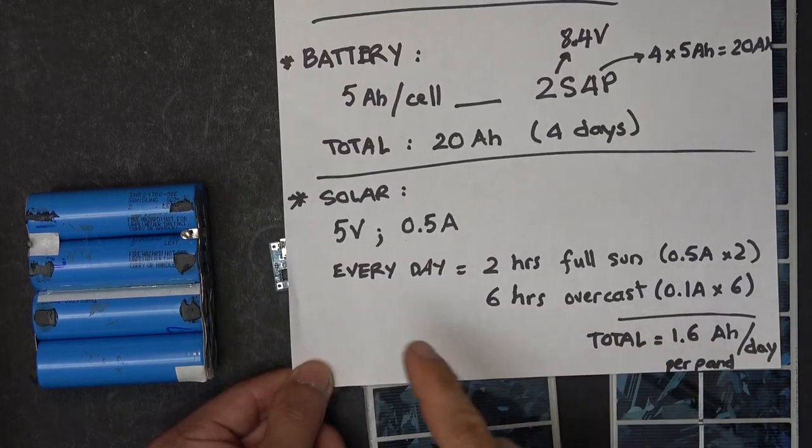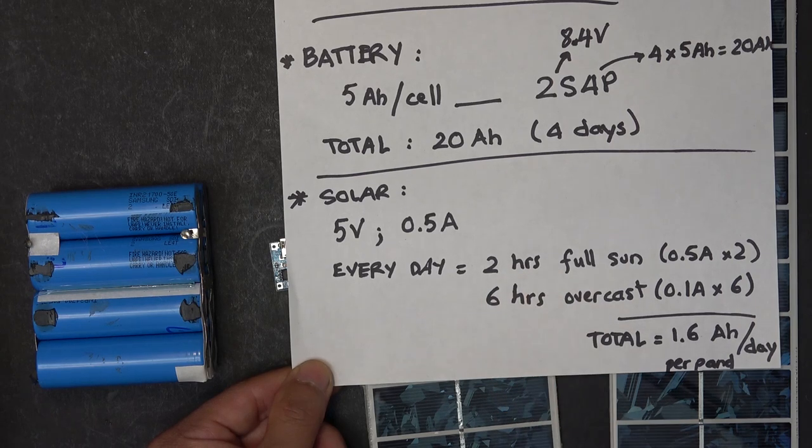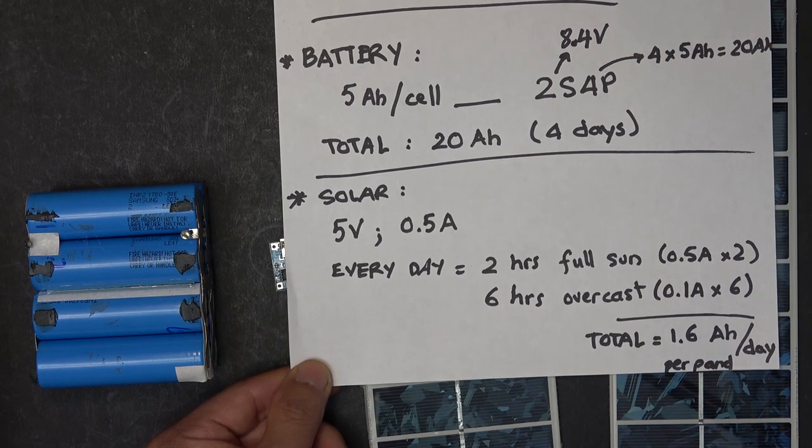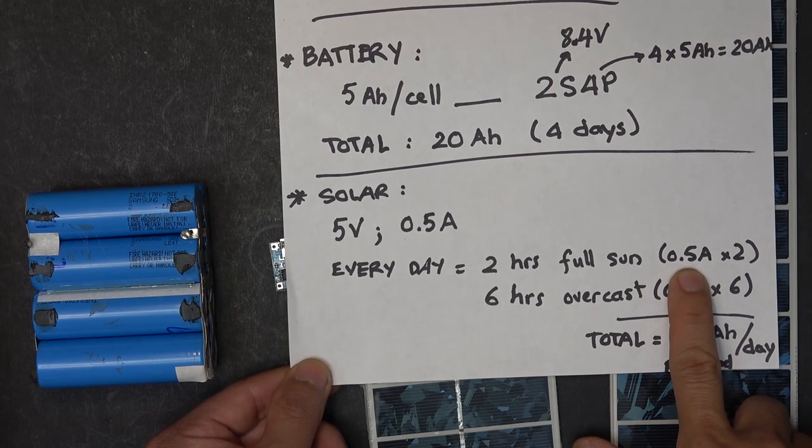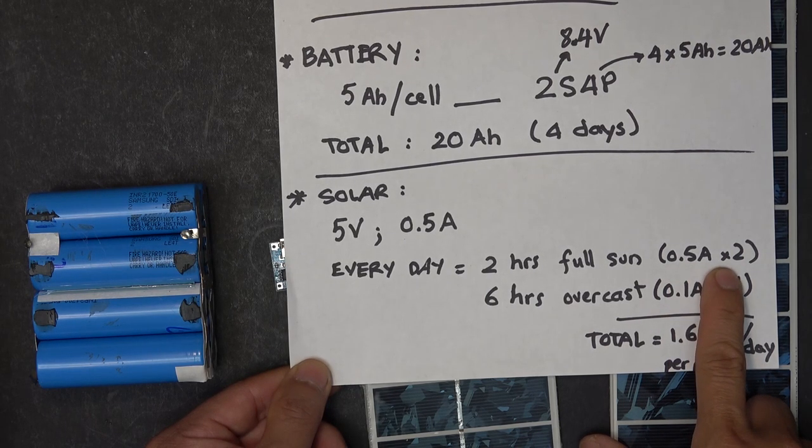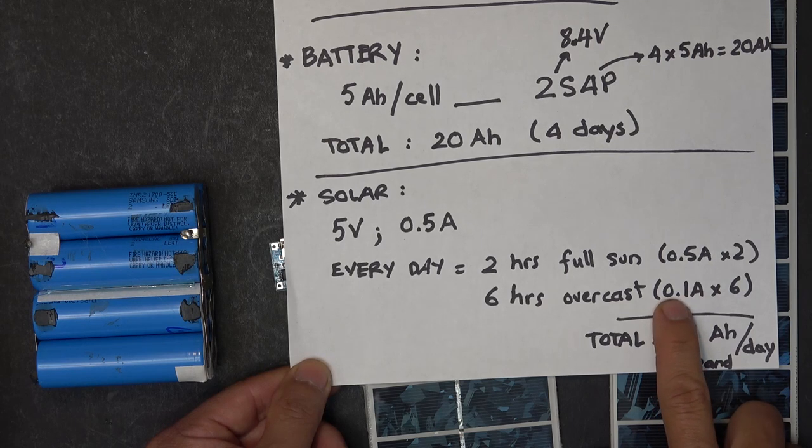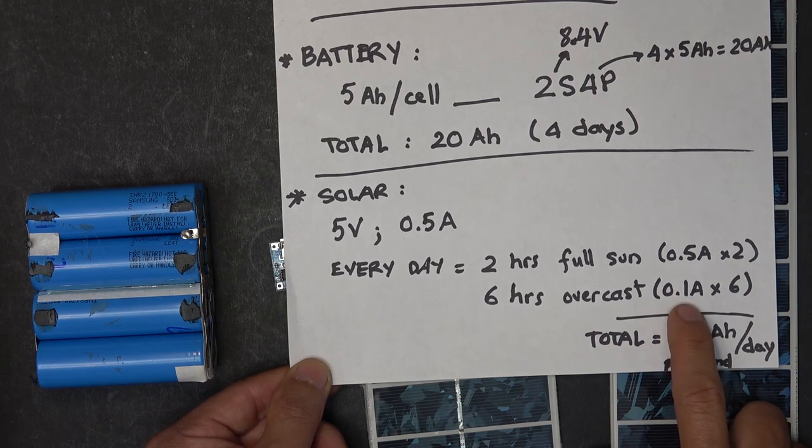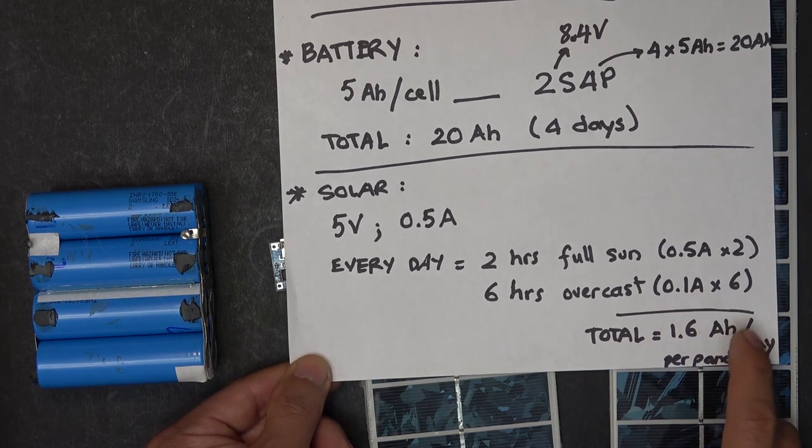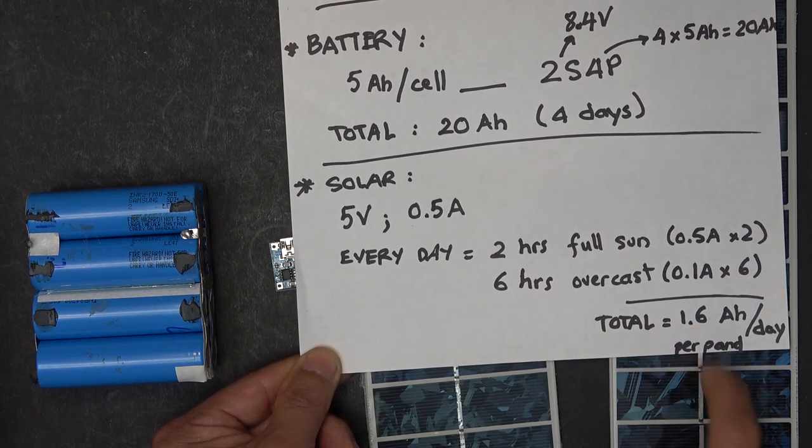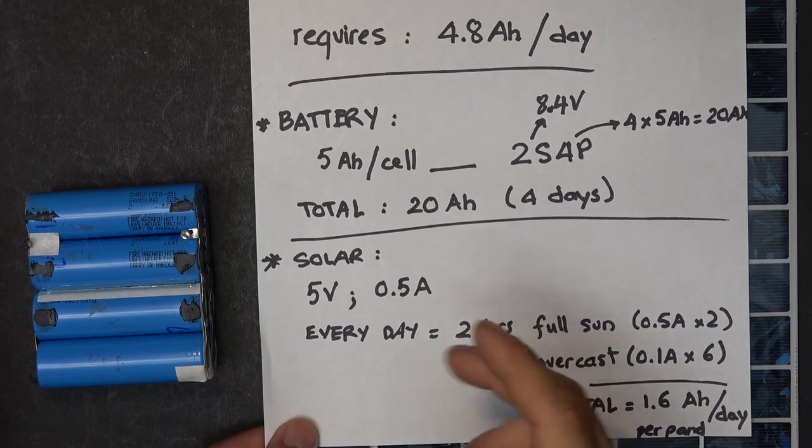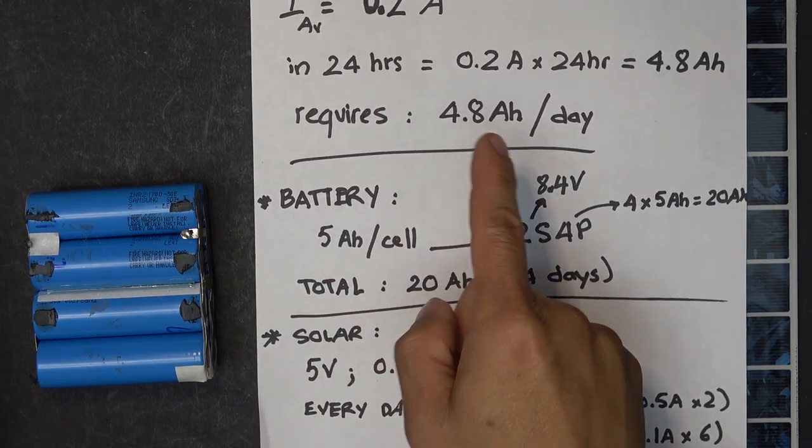So how much solar power do I need per day to provide enough power for the controller? In the area where I live, every day only has two hours of full sun and then six hours of overcast on average. With full sun I have 1 amp hour, and overcast only has about 20% of power coming from the solar panel, so that's 0.1 amp. For six hours I have 0.6 amp hours.